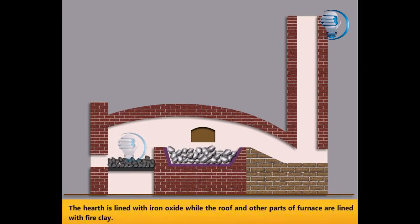The hearth is lined with iron oxide while the roof and other parts of furnace are lined with fire clay.